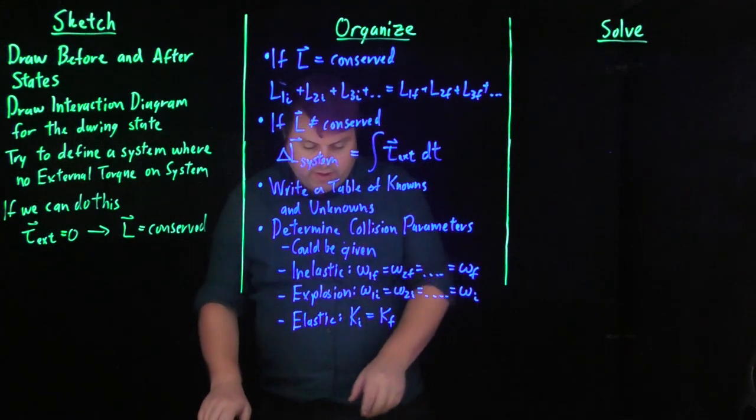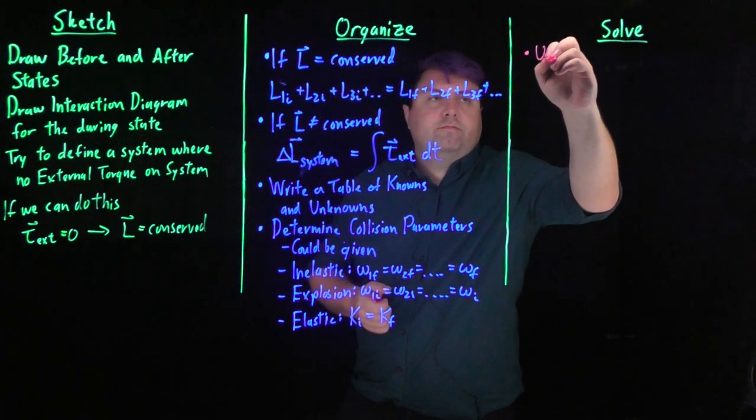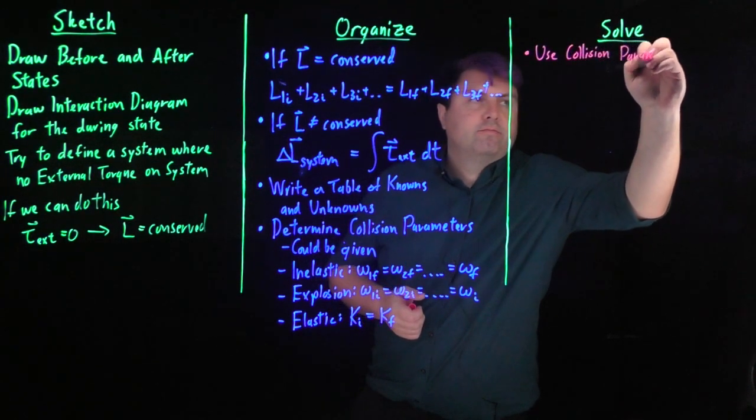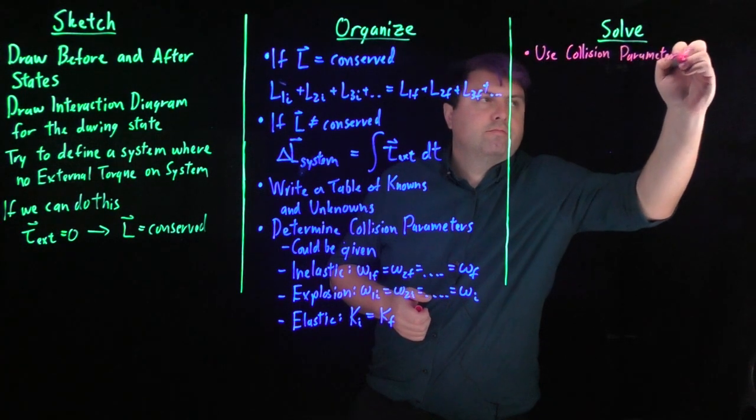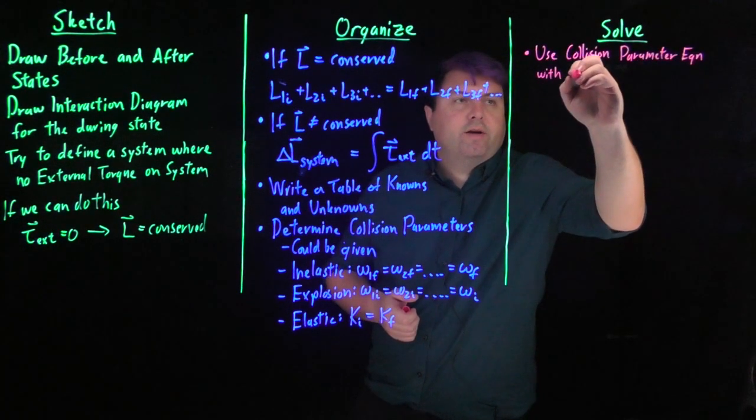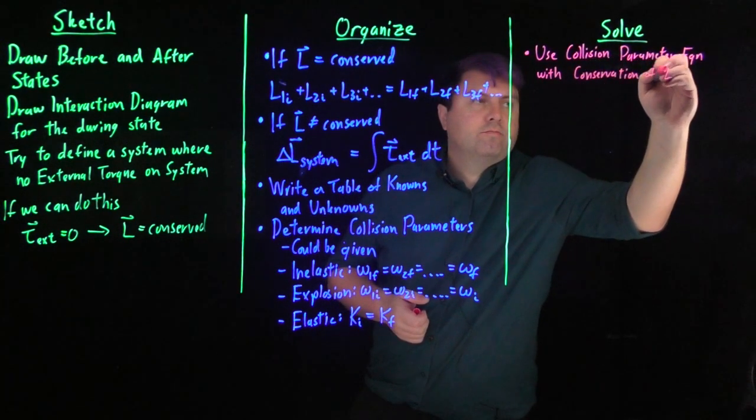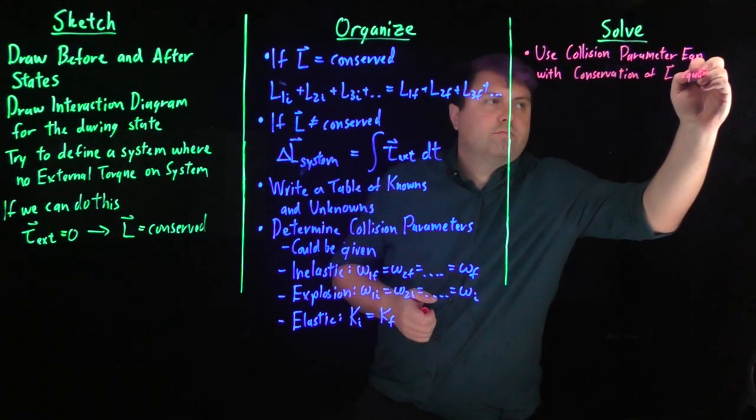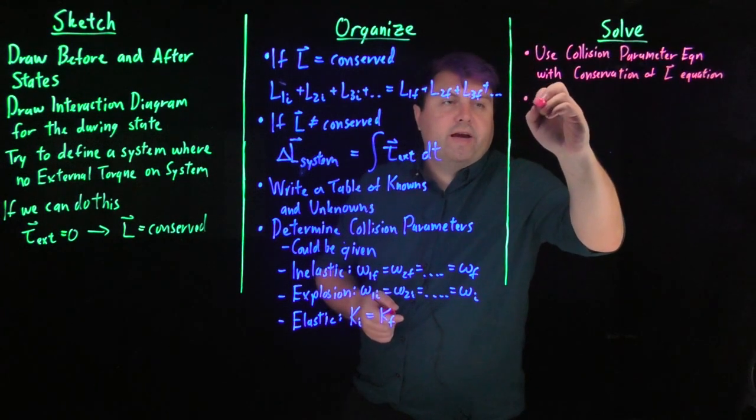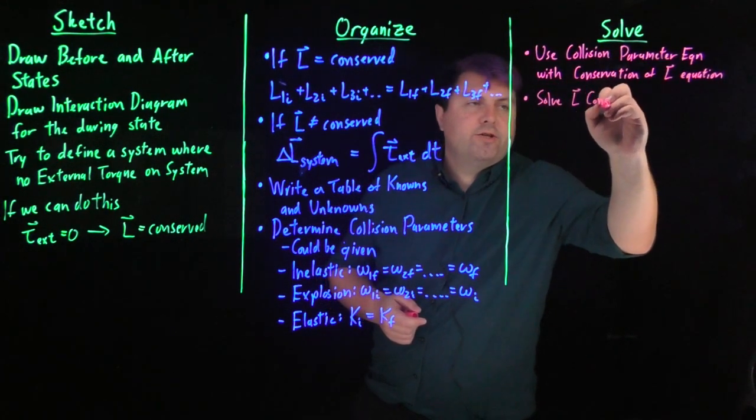So how do we solve this? We want to use our collision parameter equation with our conservation of angular momentum equation. So once we have that, we want to then write and solve our L conservation equation.